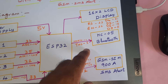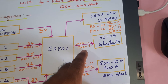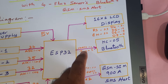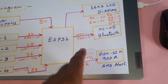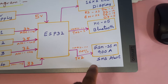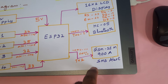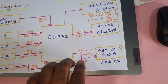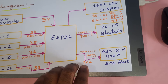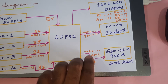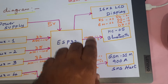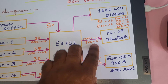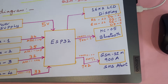The HC-05 Bluetooth module is connected to UART1. The GSM SIM900A SMS alert module is connected to UART2, with GPIO pin 17 and GPIO pin 1 used for the HC-05 Bluetooth module.